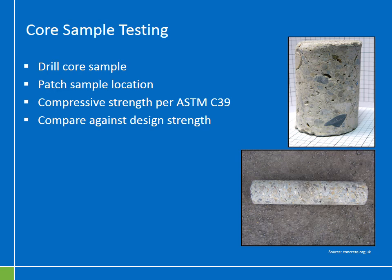The final enhanced inspection technique is core sample testing — another structural test of concrete culverts. You enter the culvert and drill out a core of the culvert's wall. You then immediately patch that sample location, as it's not best practice to leave holes in the walls of your culverts. You then conduct a compressive strength test per ASTM C39, typically a laboratory test using special equipment. That test tells you the compressive strength of that core sample, which you compare against the specified design strength of that culvert to see if the wall strength has degraded over time.